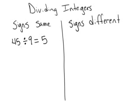The same thing happens when they're both negative. If you had negative 45 divided by negative 9, when the signs are both the same, the answer is positive. So it would be a positive 5.